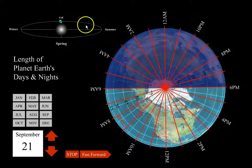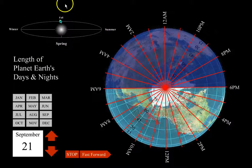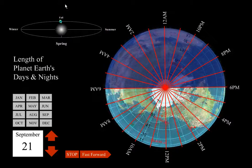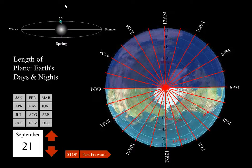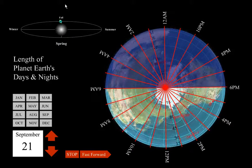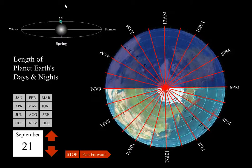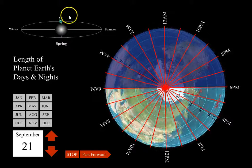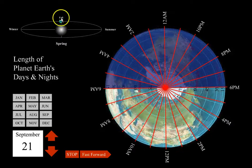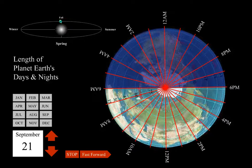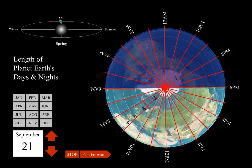Now if we look up here we can see where the earth is in its orbit around the Sun. As we've talked about, a critical part of what causes the seasons is that the earth is tilted on its axis by 23 and a half degrees as it makes a revolution around the Sun.